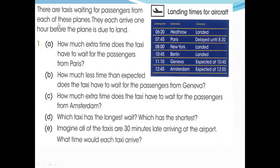Now there are some questions about taxis waiting for passengers from arriving aeroplanes. The taxis each arrive one hour before the plane is due to land. The table shows landing time, destination, and comments about whether the flight is delayed. Question one: how much extra time does the taxi have to wait for passengers from Paris? Paris landing time is 7:45 but it's delayed until 8:20. From 7:45 to 8:00 is 15 minutes, then 20 more minutes to 8:20 - that's 35 minutes extra wait.